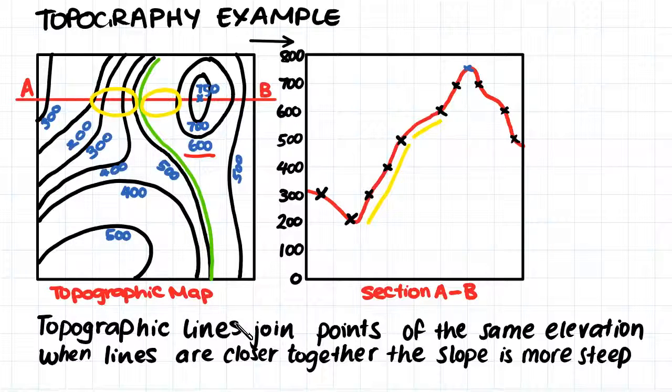This is because in this region, we are rising up 100, 200, 300 meters over this length here. Whereas in this region, which is of a similar length, we are only rising up 100 meters. So therefore, this slope is much more steep than this slope.